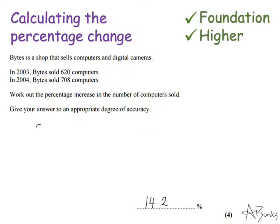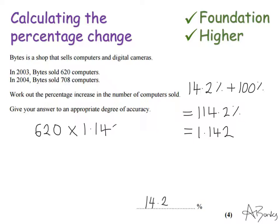For a 14.2% increase, I'll add the 100% that I start with, so that's 114.2%. To write that as a decimal, that's 1.142. So I multiply by 1.142. You can do it a different way—divide 620 by 100, then times by 14.2, and add that back on—but this is probably the quickest way if you're comfortable using multipliers. When I type this in my calculator, I actually get 708.04.